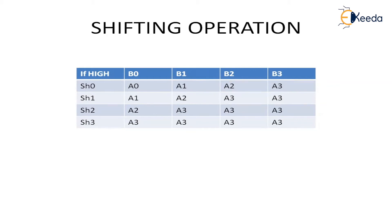If SHIFT2 is high, data shifts left by 2 bits: A2 goes to B0, A3 goes to B1, and the empty positions are filled with A3. For SHIFT3, this is the 2-bit shifted value shifted one more bit left — A3 comes to B0, and the remaining empty positions are filled with A3 as well, since the last bit of your input is passed to all empty places.